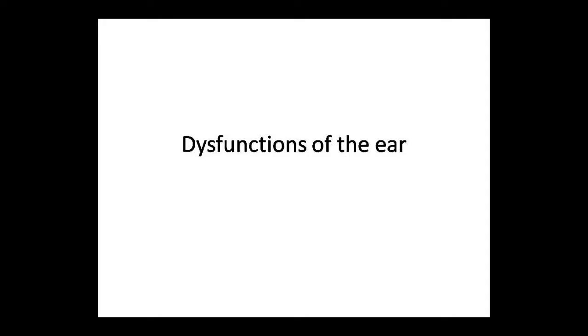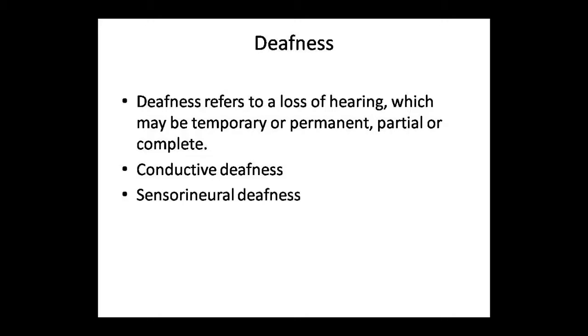First, let's discuss deafness. Deafness is a dysfunction — we also call it loss of hearing. This loss of hearing can be temporary or permanent, and partial or complete. Deafness is classified into two types: conductive deafness and sensory neural deafness.